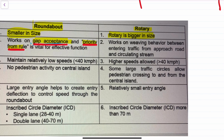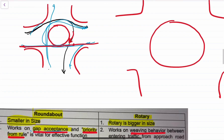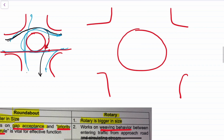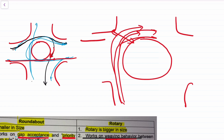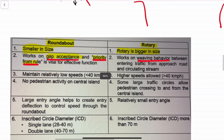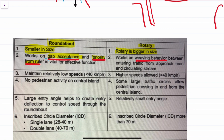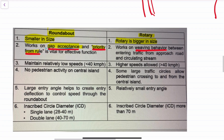In a rotary, the movement is based upon the weaving section — based upon the weaving behavior. This means there is an ample amount of weaving space available, so if there are multiple vehicles moving in the same direction, they have ample space to move from one lane to another. So the rotary works upon the weaving behavior.